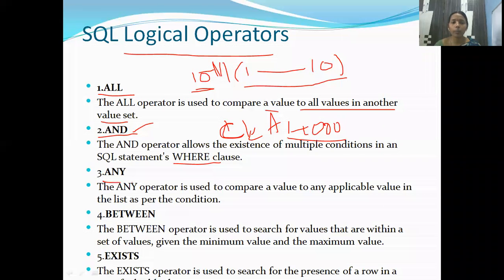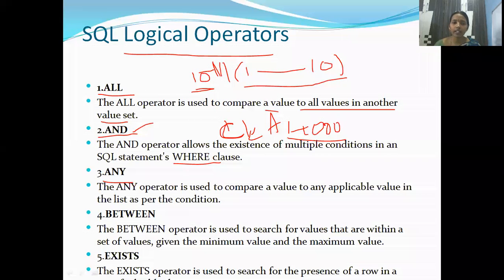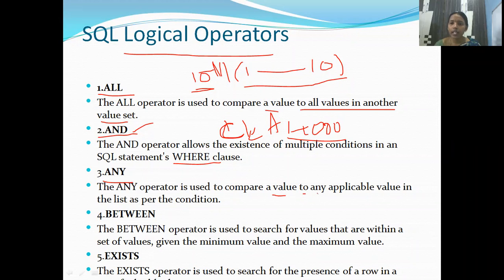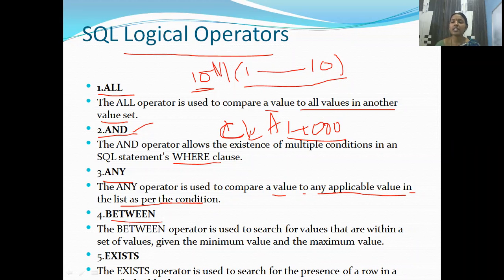The ANY operator is quite opposite to ALL. ALL means all values are compared; ANY means any one of the values will be compared. The ANY operator is used to compare a value to any applicable value in a list as per the condition. Greater than or less than with ANY and ALL will be shown with examples in the next session.